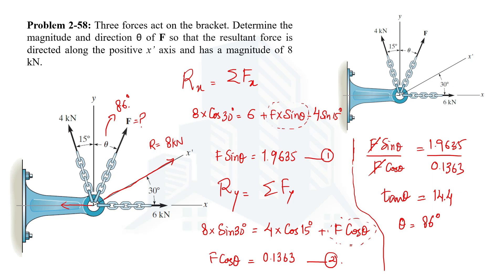Now how about the magnitude? This can be calculated by putting in any of the equations, equation 1 or equation 2. Let's say if we put in equation number 1 then it will be F sine 86 equal to 1.9635.